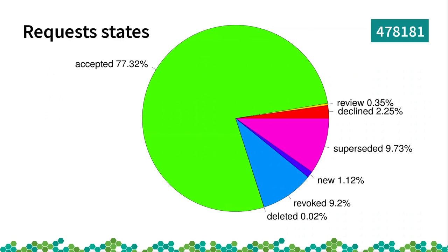The next largest percentage, shown here by state, is superseded — meaning they were not closed but we keep working on it, which is also quite good. Then we have some revoked and declined, which are more or less the bad ones, but they are closed and it's not that big a number.